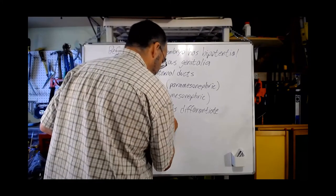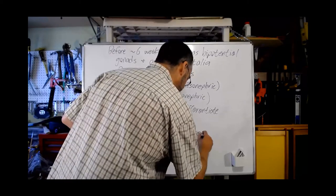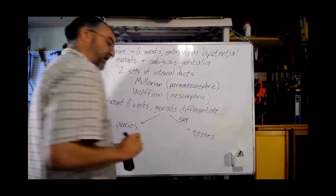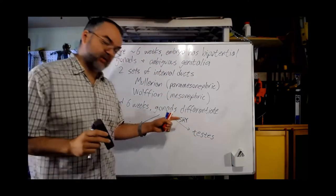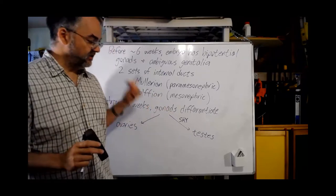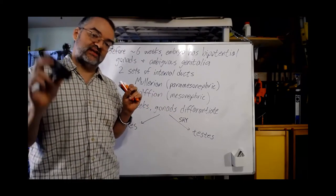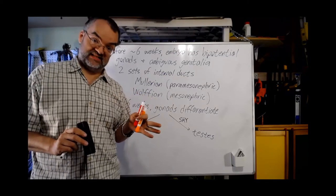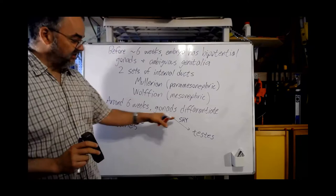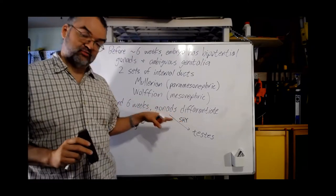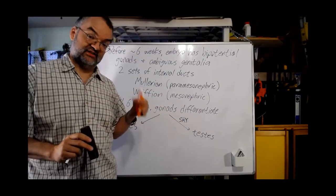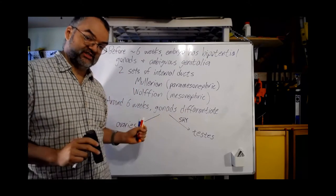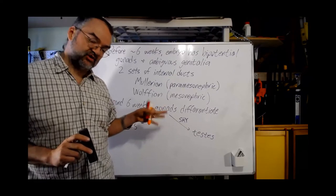But in the presence of the SRY gene on that Y chromosome, if you have a Y chromosome with an SRY gene, that SRY gene produces a protein which causes a difference in how the gonads develop, and instead they become testes rather than ovaries. The presence of that SRY gene and its product is what causes gonadal differentiation, which starts around six weeks.